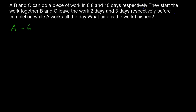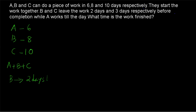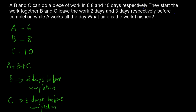A is taking 6 days to complete a work, B is taking 8 days to complete a work, and C is taking 10 days to complete the work. And they are starting the work together — A, B and C are starting the work together. But before completion, B is leaving the work 2 days before completion and C is leaving the work 3 days before completion, but A is working till the end. So how many days will be taken to finish the work?